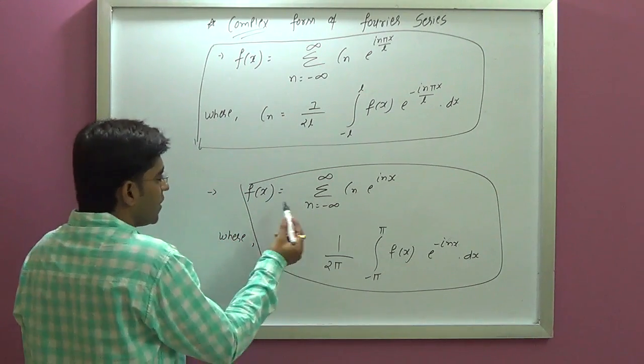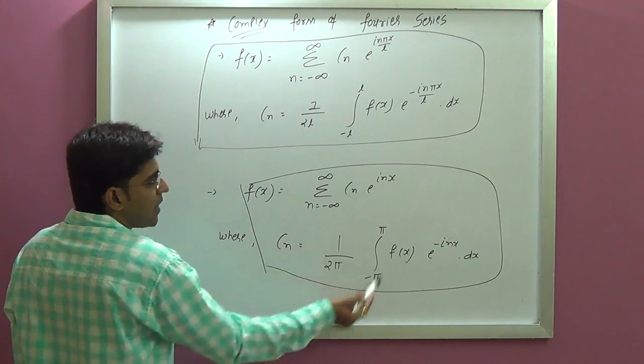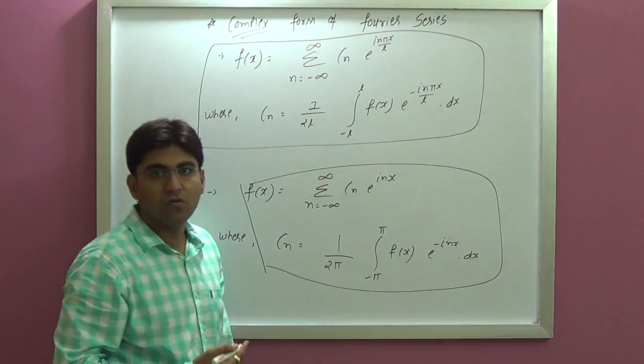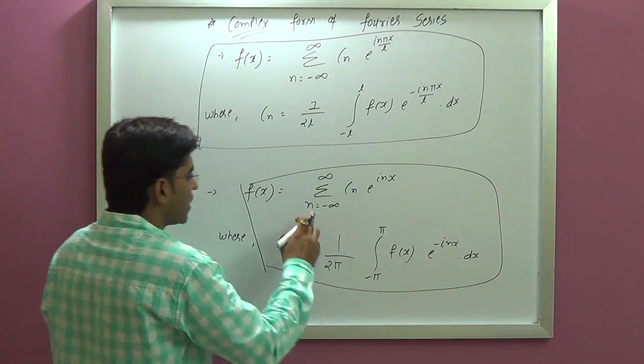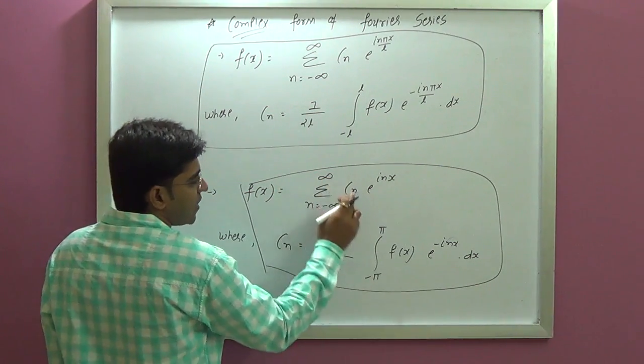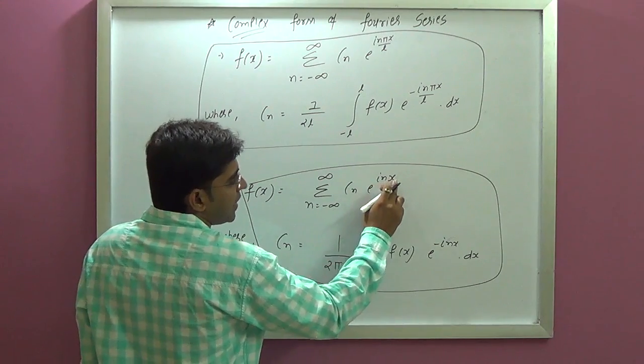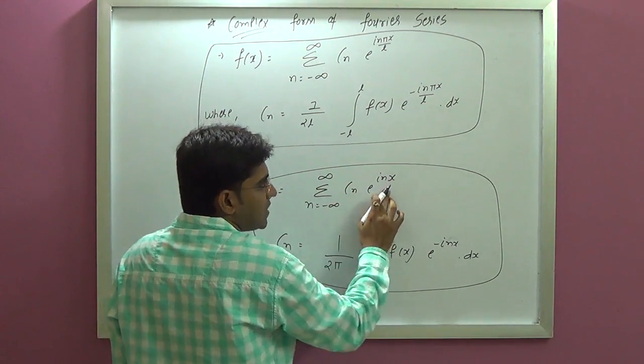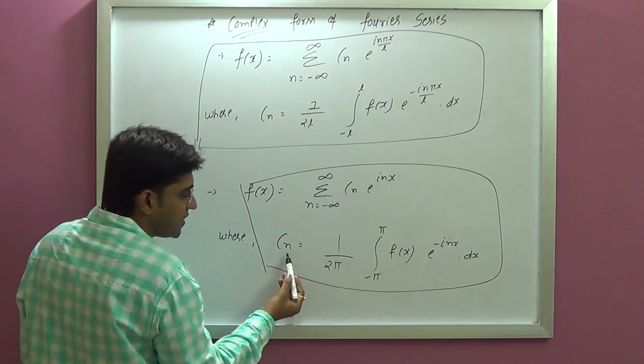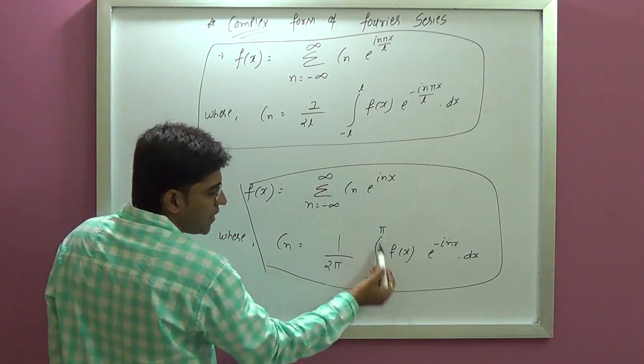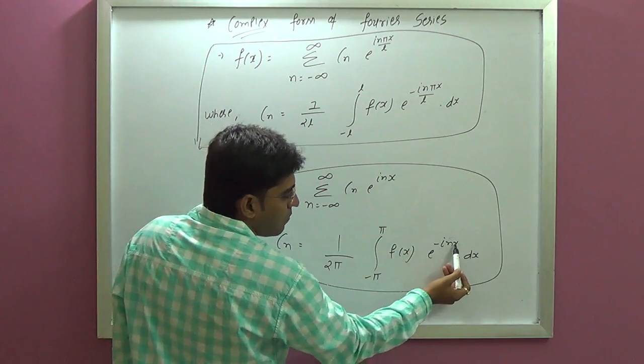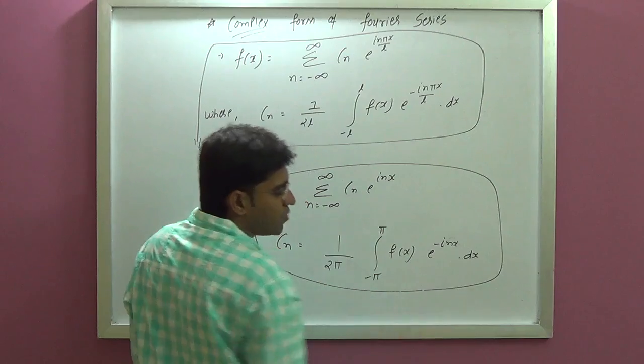Same way, f of x from minus pi to pi, where cn e raise to i n pi x by l, pi by l cancel here, that means i n x. Same way, cn e raise to i n x, 1 upon 2 pi integration minus pi to pi, f of x e raise to minus i n x into dx.